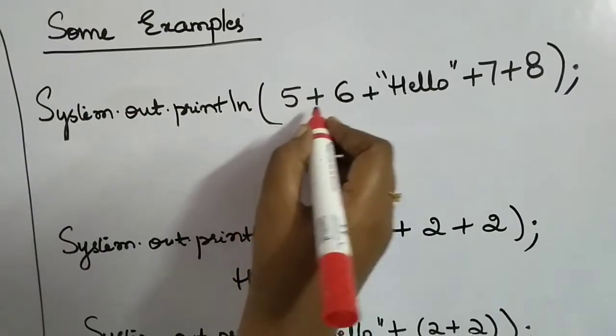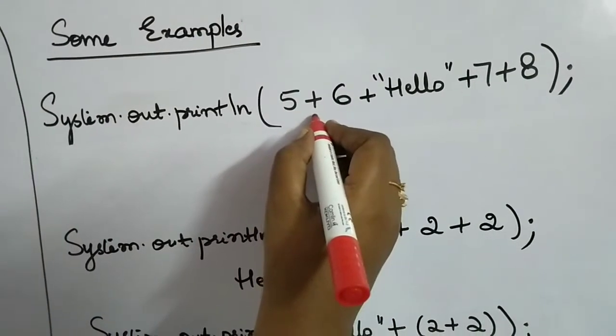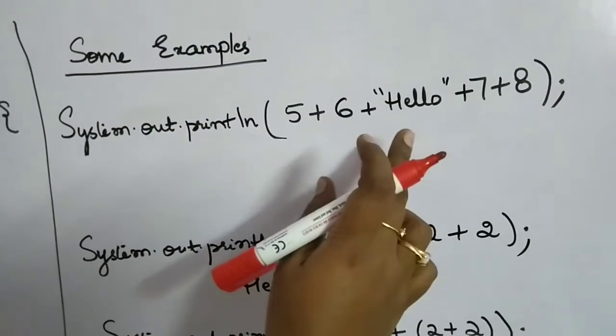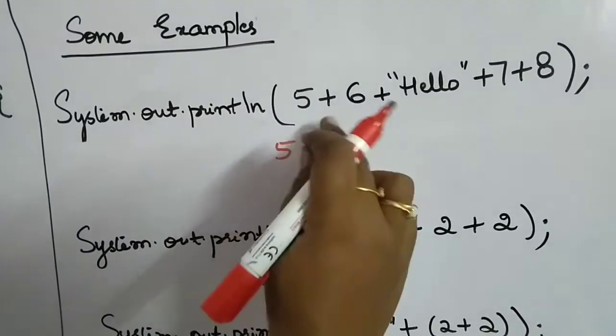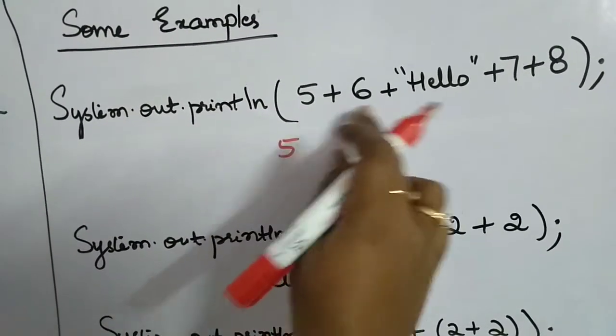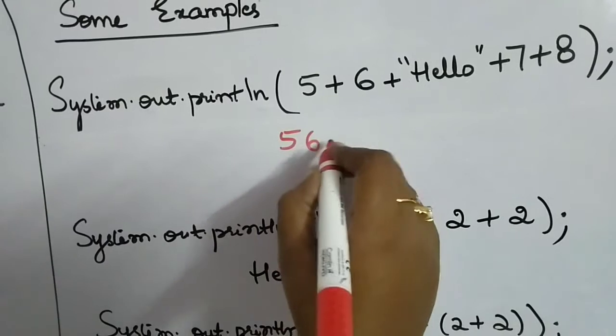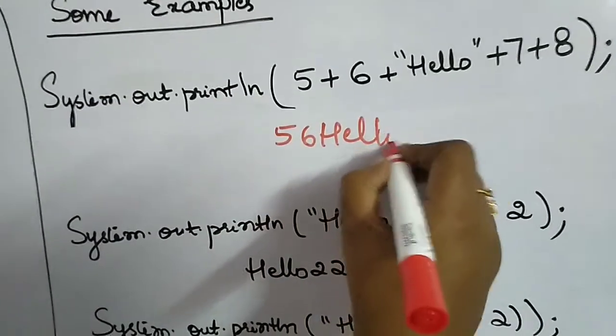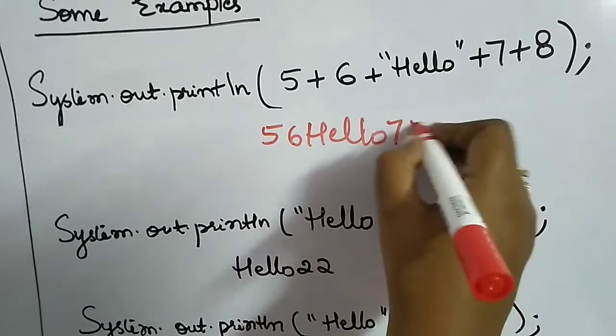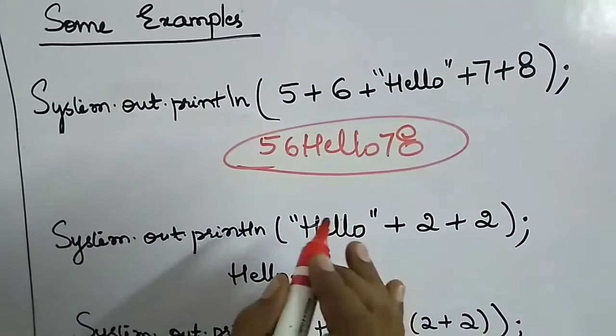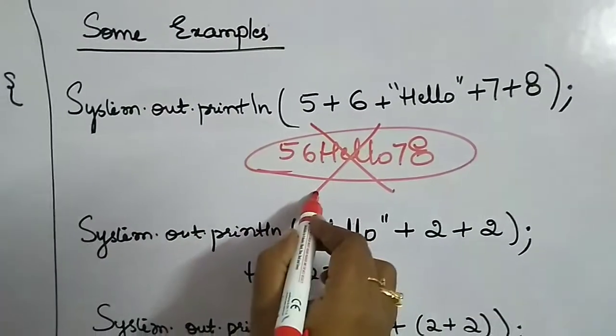According to what we learned, this is used to concatenate strings. So the output will be 5 combined with 6, then Hello, then 7, then 8: 56Hello78. This is what you are imagining, but this is absolutely wrong.